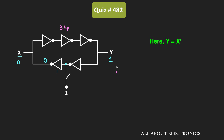Now this Y output passes through two more gate delays. Since we have two NOT gates, the output of these two NOT gates will be the same as the Y input. Since Y is equal to 1, the same will appear, meaning after two more propagation delays, this X output will also become 1.